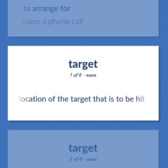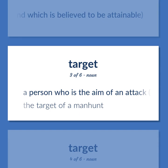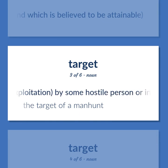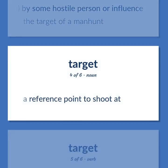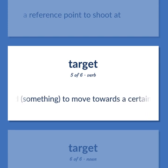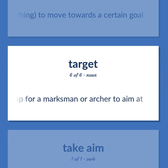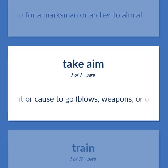Target: the location of the target that is to be hit. The goal intended to be attained and which is believed to be attainable. A person who is the aim of an attack — especially a victim of ridicule or exploitation by some hostile person or influence. The target of a manhunt. A reference point to shoot at. Intend something to move towards a certain goal. Sports equipment consisting of an object set up for a marksman or archer to aim at. Point or cause to go — blows, weapons, or objects such as photographic equipment, towards.